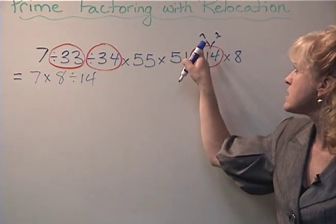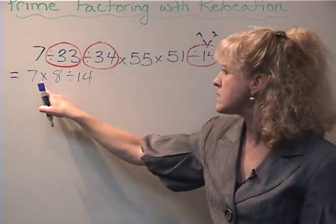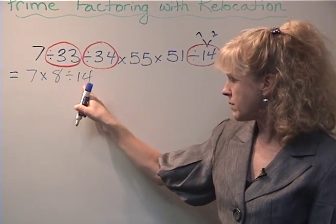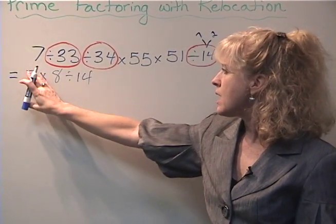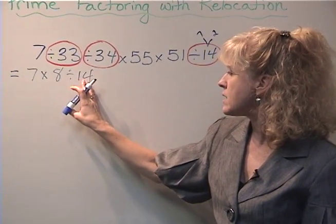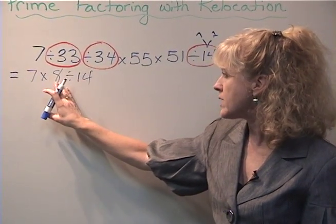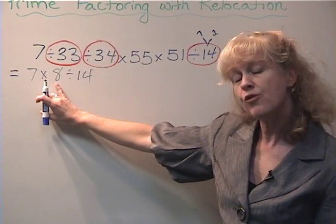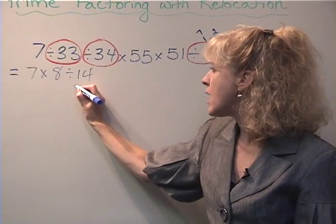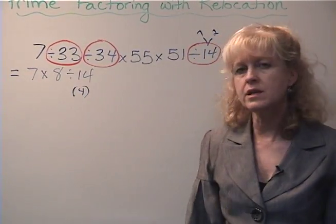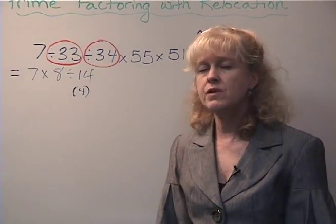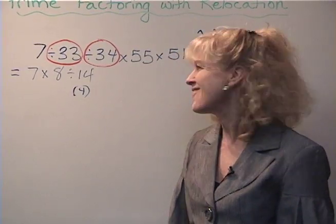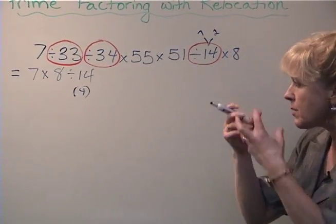Now remember, 14 is 7 times 2. So this 7 that was divided by would actually divide out the 7, and the 2 from here would divide out one of the 2's here. And what you're left over with when you divide out the 2 is 4. So at this point you have 4. Notice I didn't have to say 7 times 8 is 56 divided by 14 is 4. Sort of peeling apart numbers.